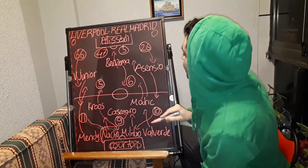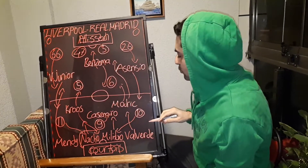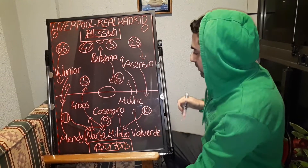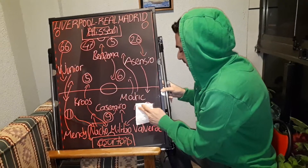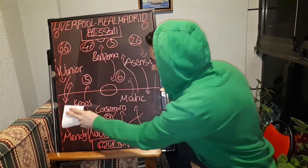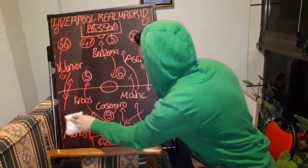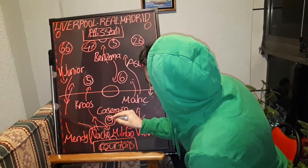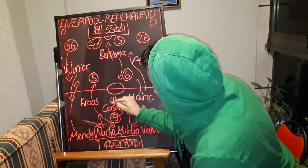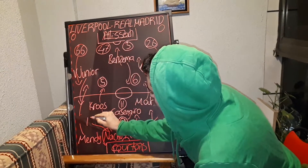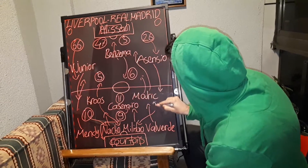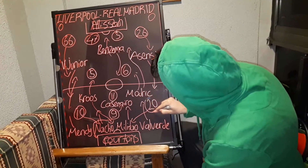Fabinho played in the centre of defence after these substitutions. Firmino played on the forward, Mane moved to the right wing, and Salah played behind Firmino. Diego Jota played on the left forward.